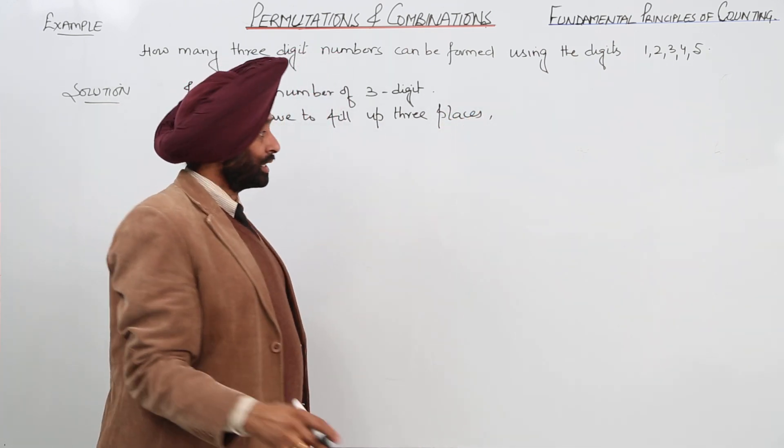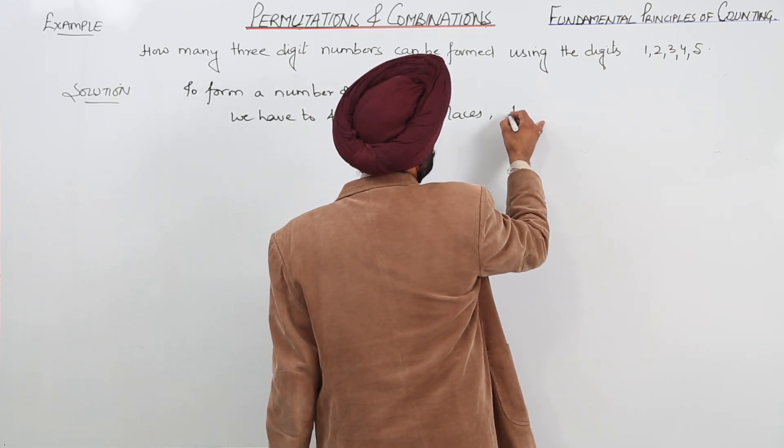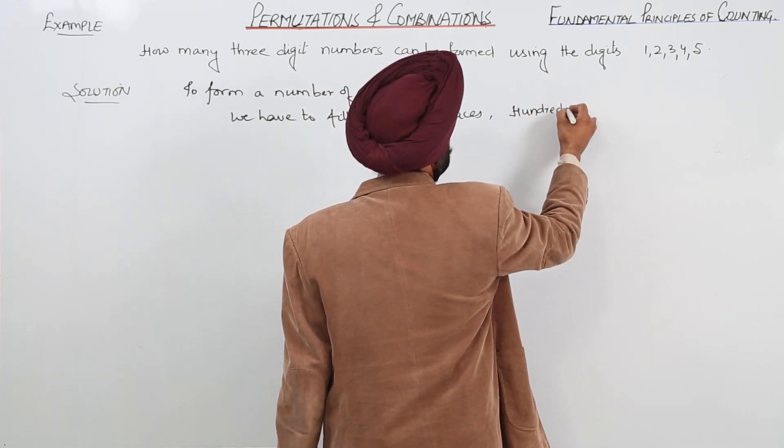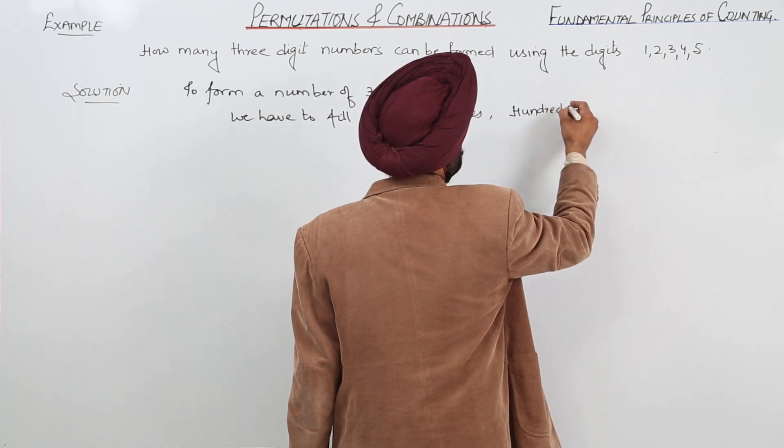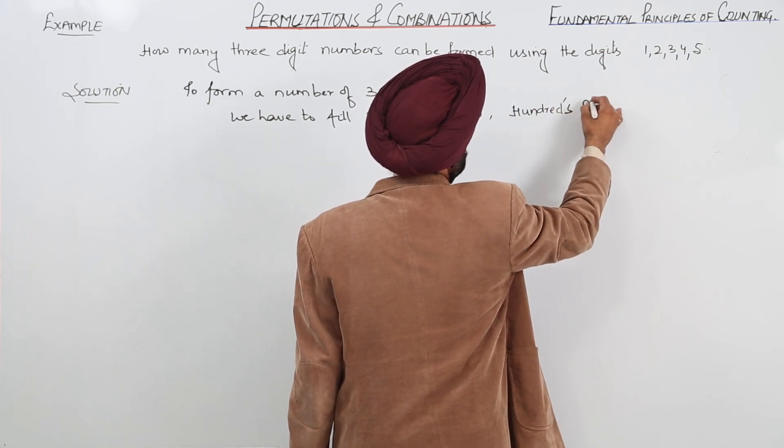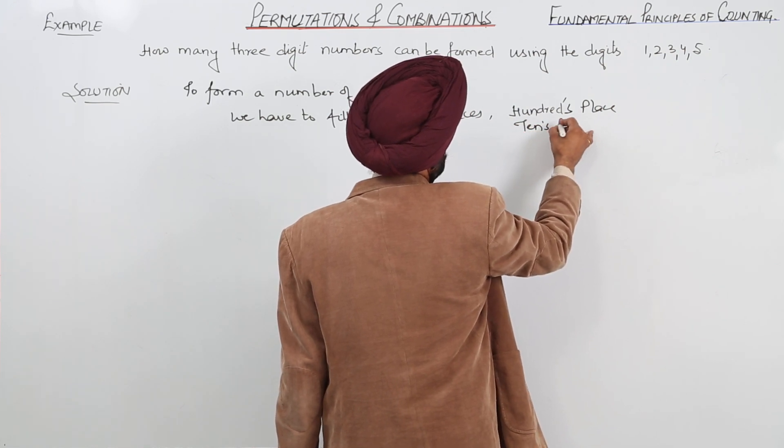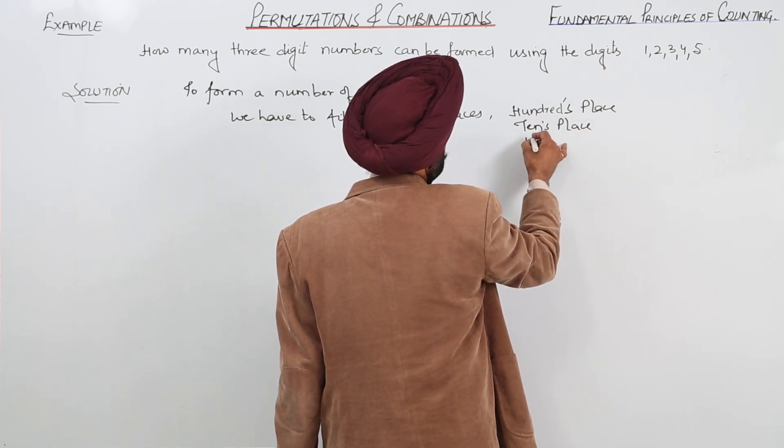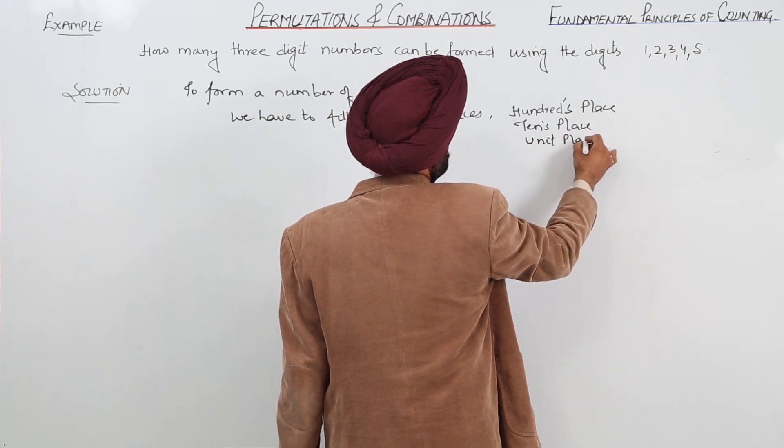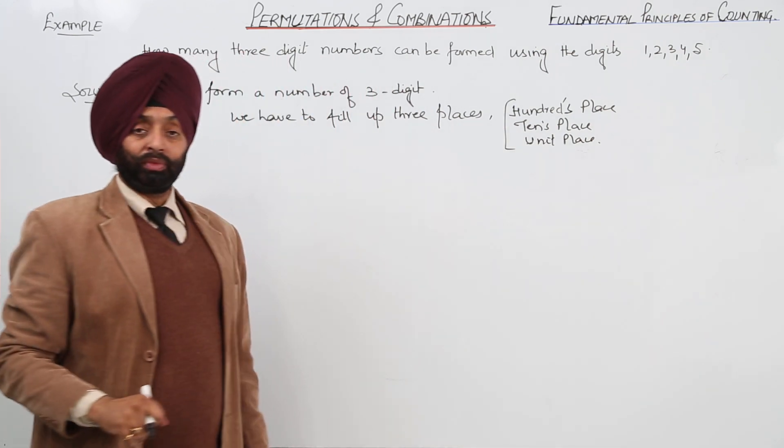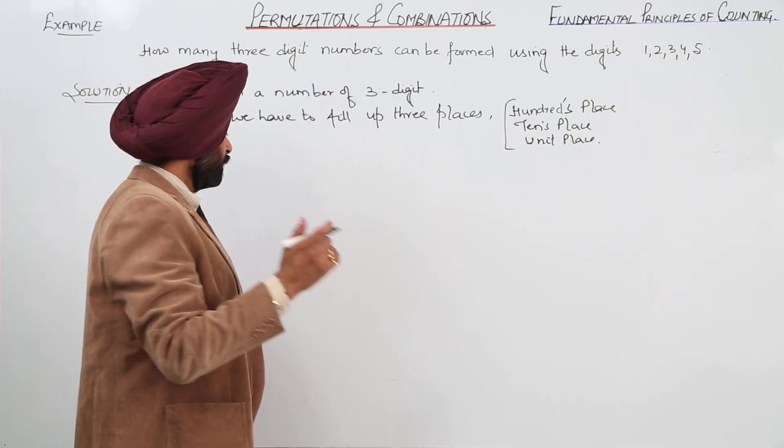which you have done in the junior classes. 3 places means what? 100th place, 10th place and unit place because these 3 will form a 3-digit number.